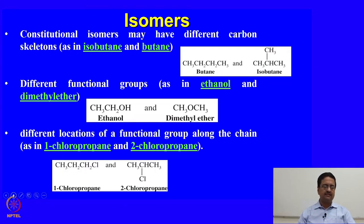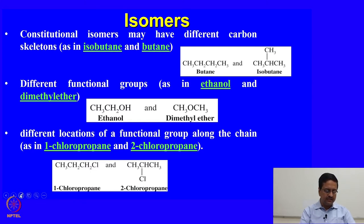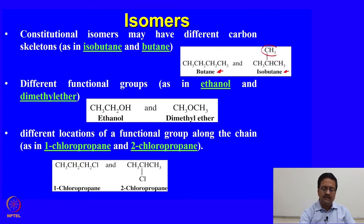Constitutional isomers may have different carbon skeletons. That means you may have the same molecular formula but a different carbon skeleton, as shown in this example where butane can be in a linear chain form or have a branch using a methyl group, forming isobutane. That is a constitutional isomer.